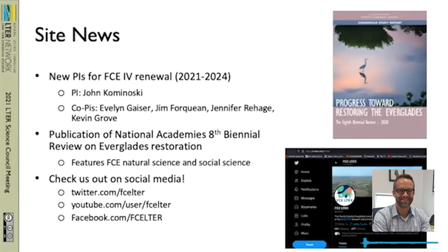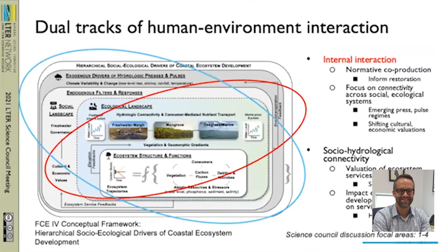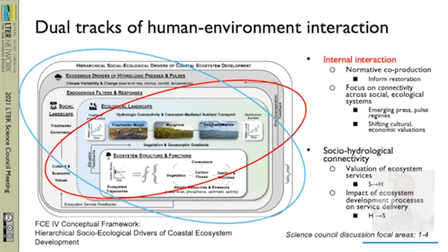The report features research from FCE scientists, and it drives home how the FCE network is exploring a hydrologically managed site. The National Academy's regular evaluations of Everglades restoration ensures that the social and natural science that we do gets into the comprehensive Everglades restoration plan. This is how we've been approaching human environment interaction in FCE research.